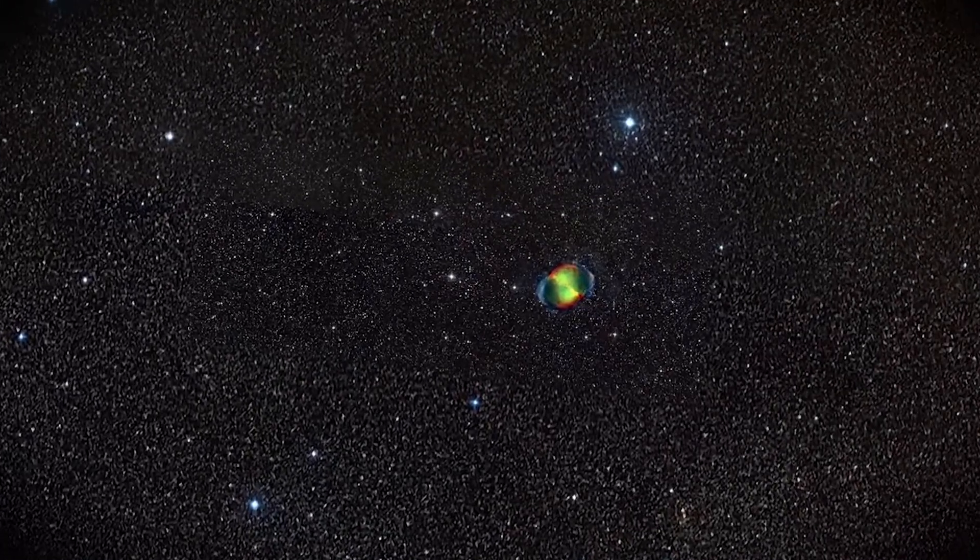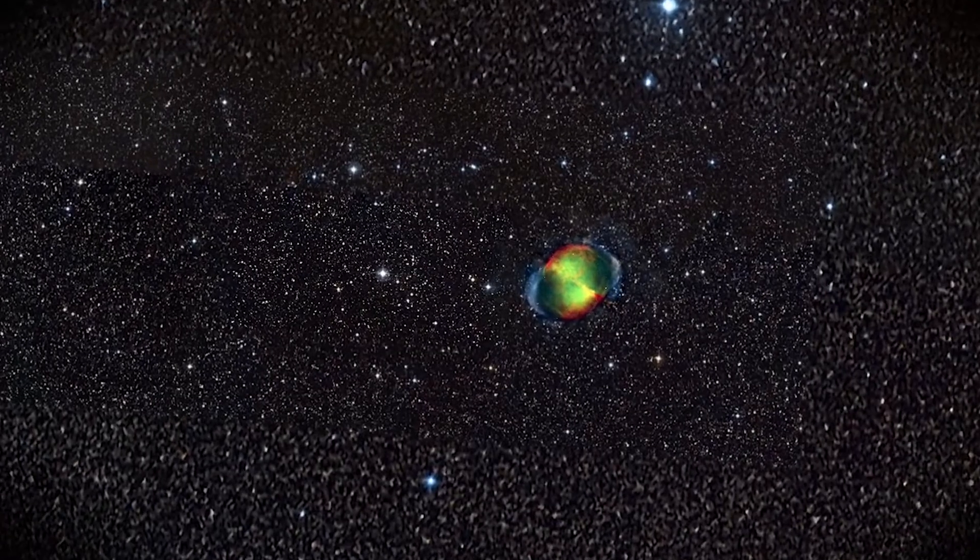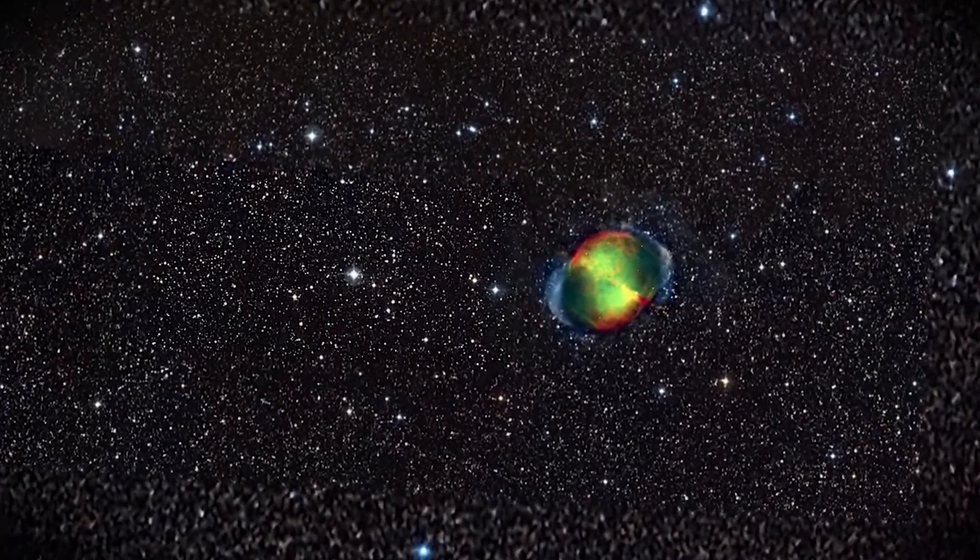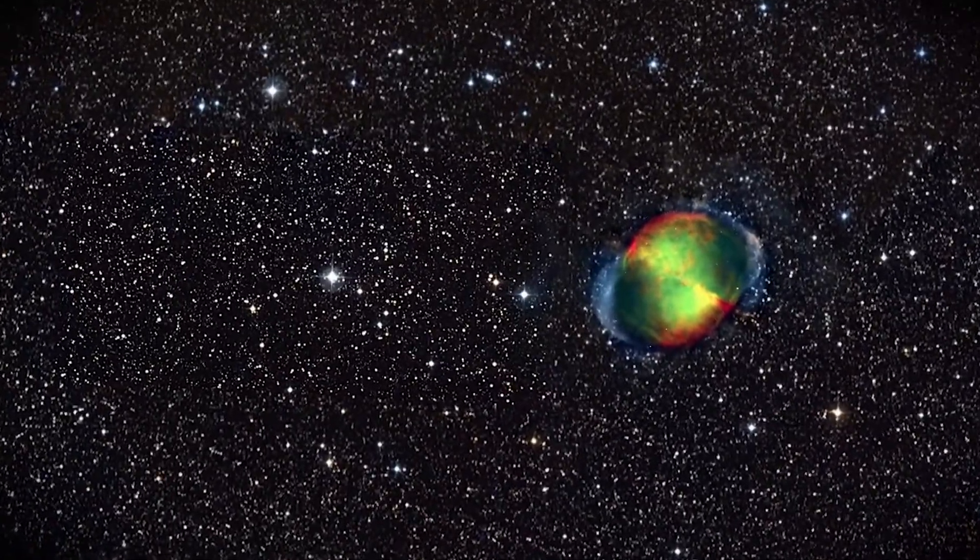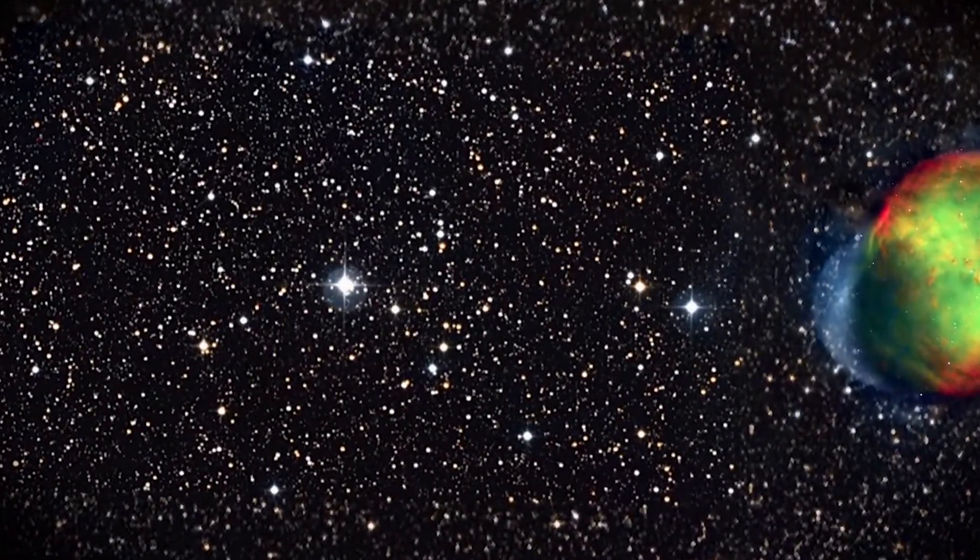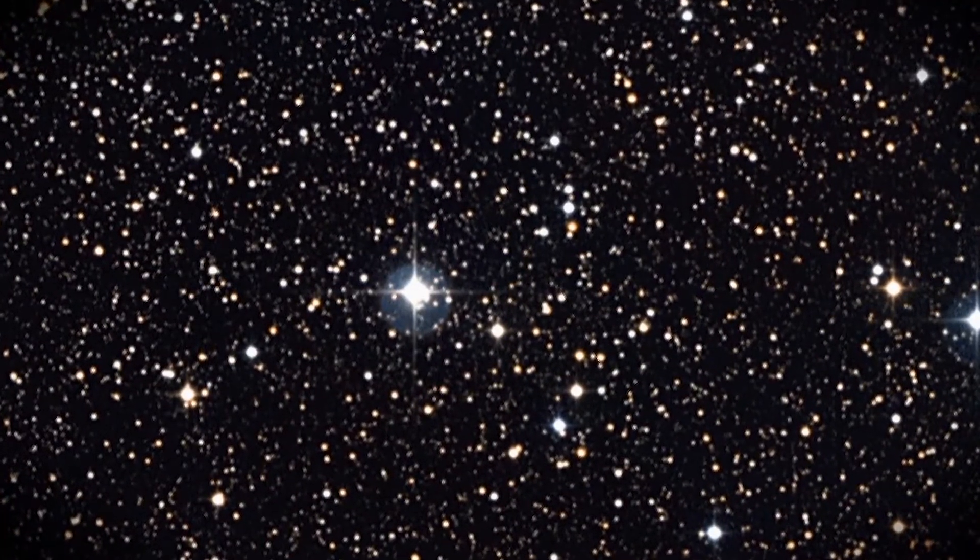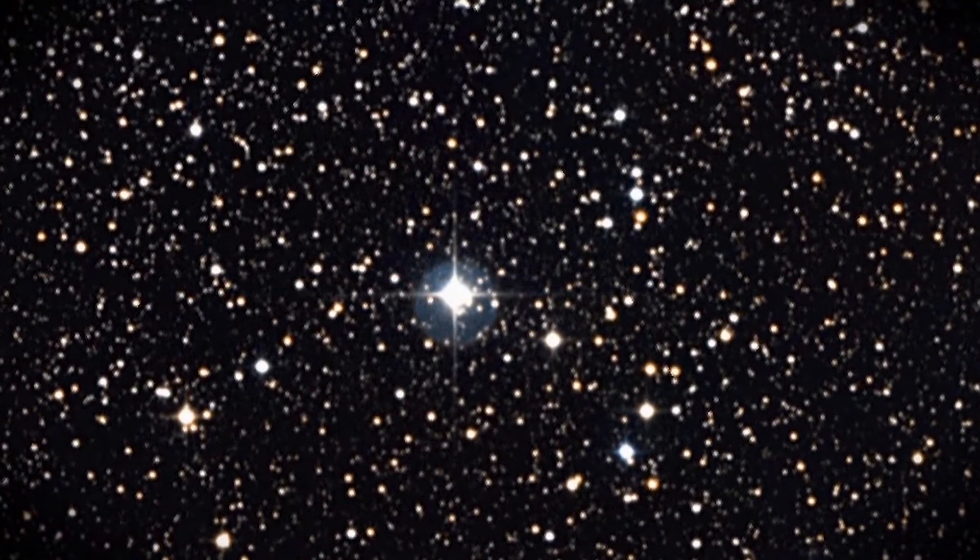Just to the east of M27, the Dumbbell Nebula, there's a star that can be seen in binoculars, and this star hosts a giant planet. The star is slightly smaller and cooler than our sun. In 2005, astronomers found its Jupiter-sized planet, named HD 189733 b.